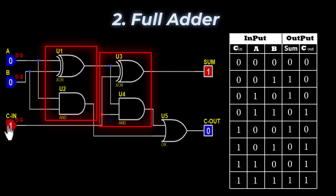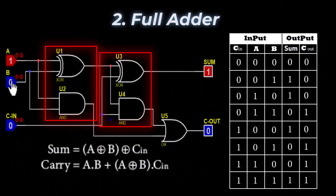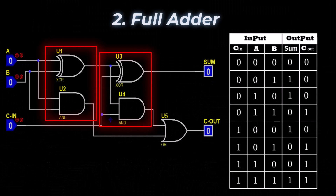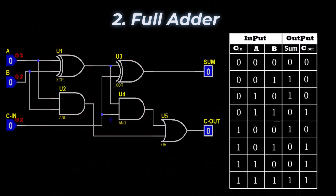The Boolean expression of a full adder is: Sum = A XOR B XOR Cin; Carry out = (A · B) + (A XOR B) · Cin. Let's now explain the full adder with the help of a truth table.